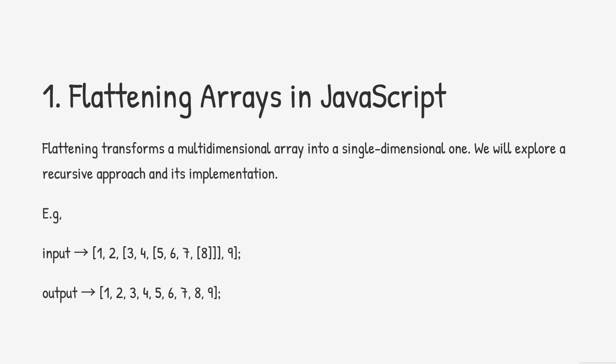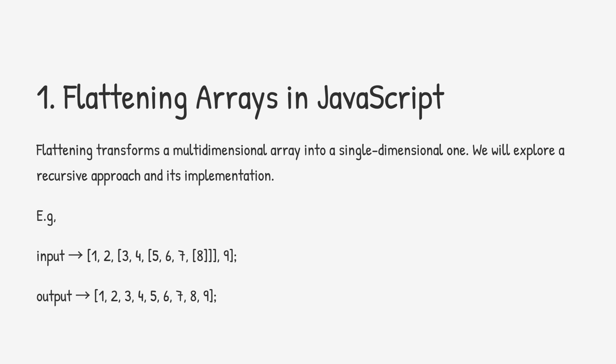Let's jump right into the first question. The first question is flattening an array in JavaScript. Flattening transforms a multidimensional array into a single-dimensional one. We'll explore a recursive approach towards solving this problem. So we have an input with a lot of nesting of arrays, and the output we need is a flattened array.